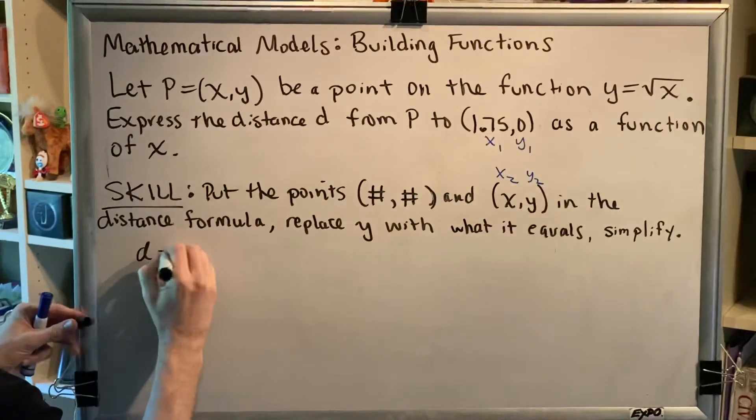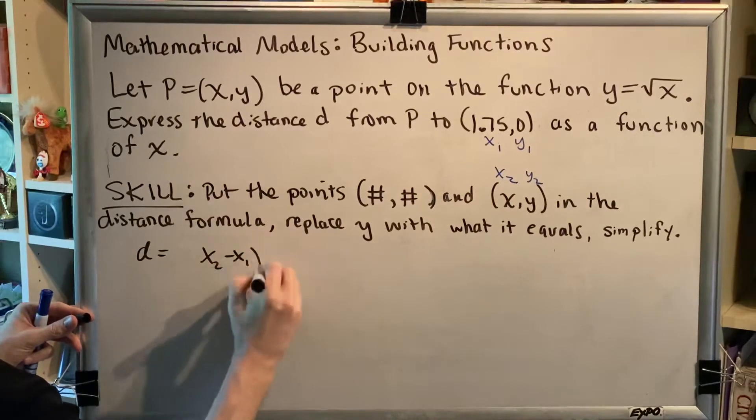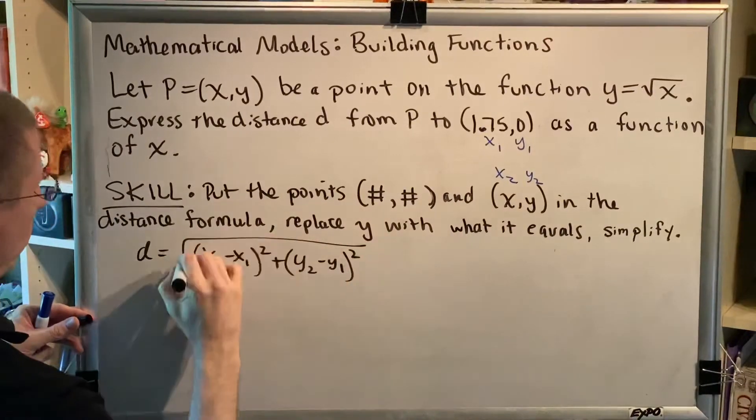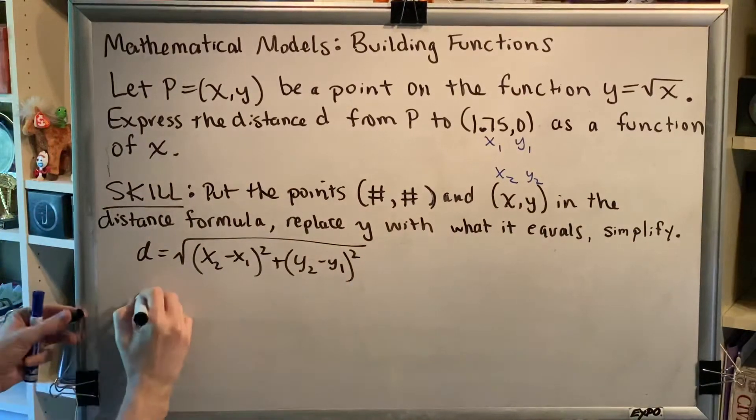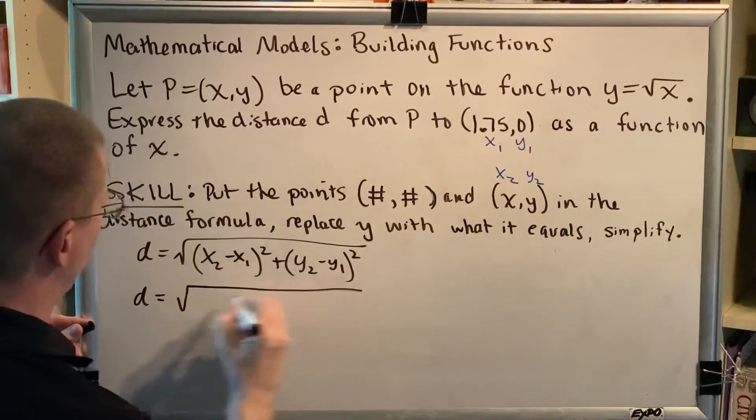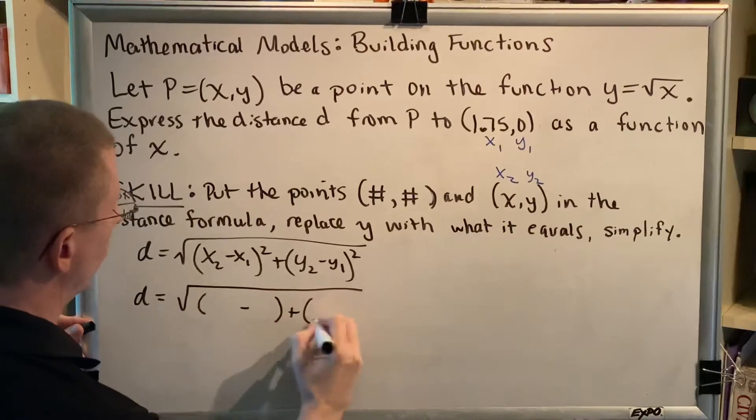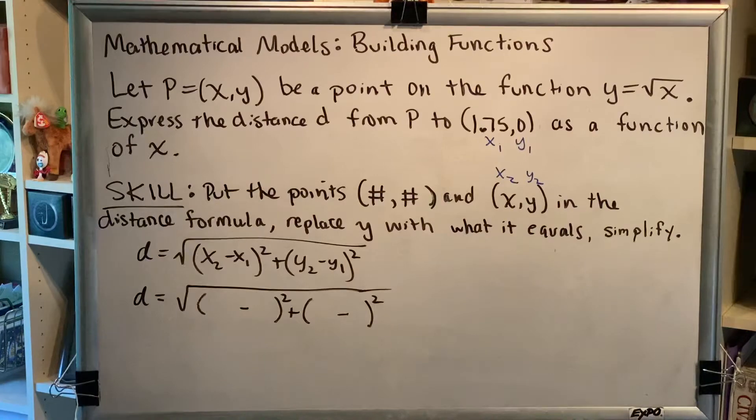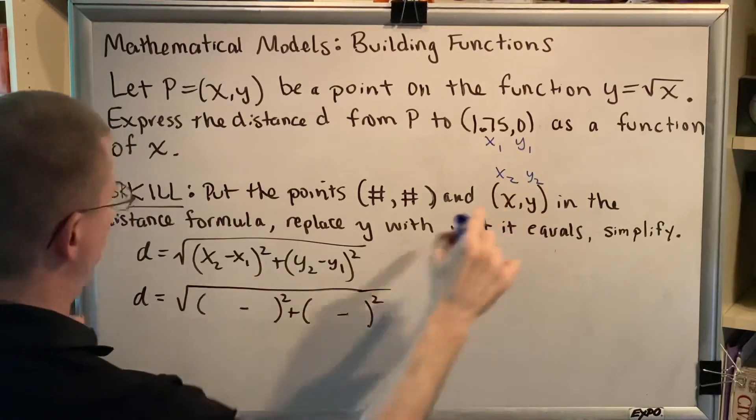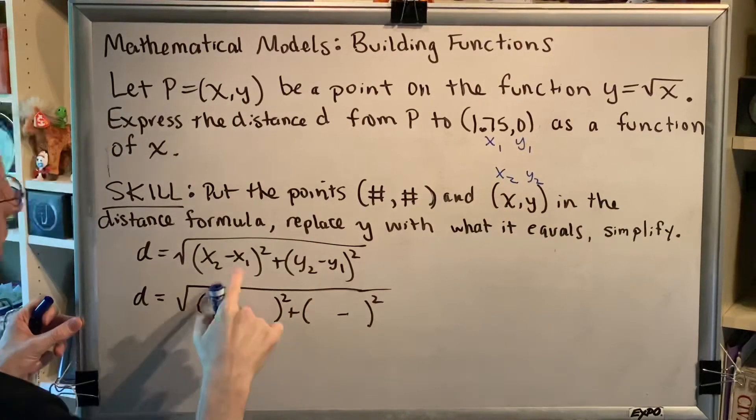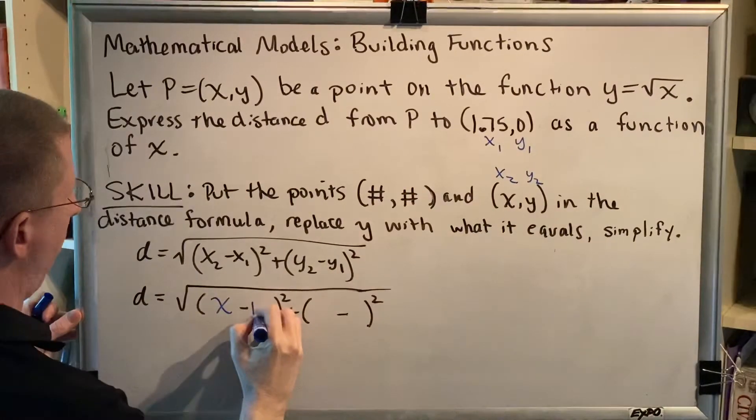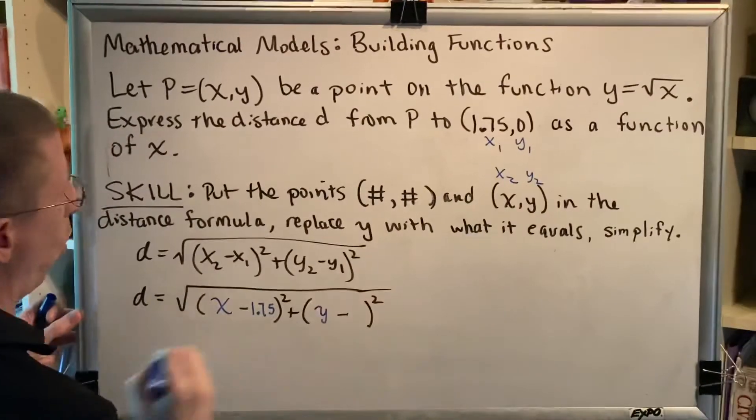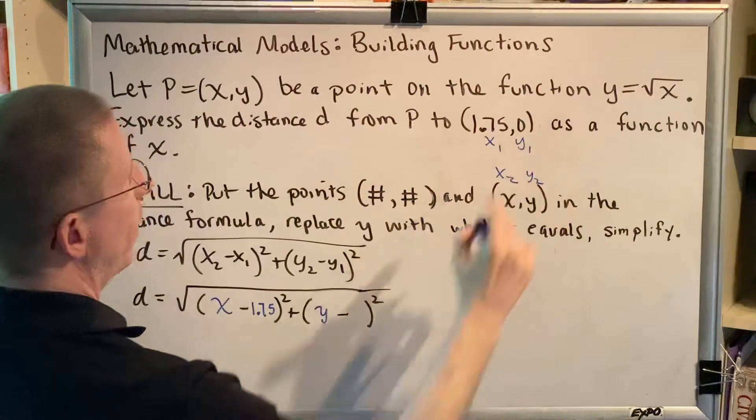Alright, here we go. Distance formula time. The distance formula goes like this and now we're going to plug into it. Okay, here we go. So x₂ for this problem that's just the letter x. x₁ that's 1.75. y₂ for this problem that's just the letter y. y₁ that's 0.